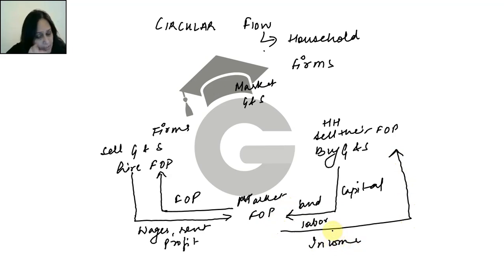What happens with the household? The income from households creates demand for goods and services. When they demand goods and services, then automatically, where does that demand go? To firms.